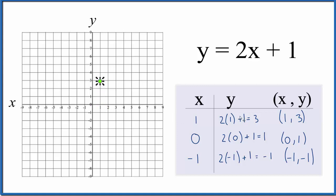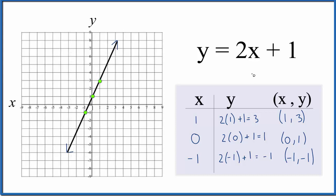Over 1, up 3. (0, 1), so 0 and then up 1. And (-1, -1), so negative 1, negative 1. Let's put a line through it. And this is the graph for y equals 2x plus 1.